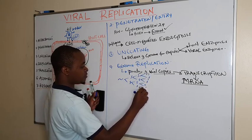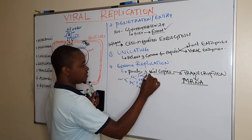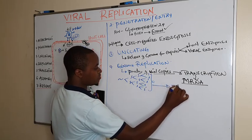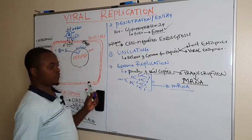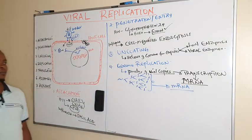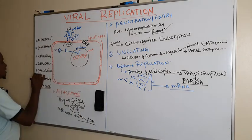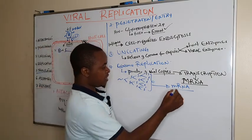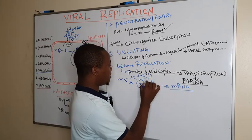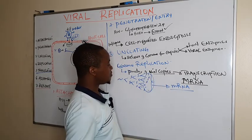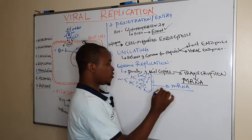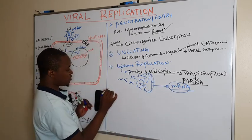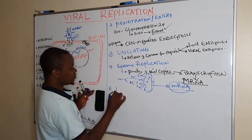After replication, the viral genome copies are transcribed to form messenger RNA of the virus. This messenger RNA moves into the cytoplasm, where it will be utilized under step number five: translation.